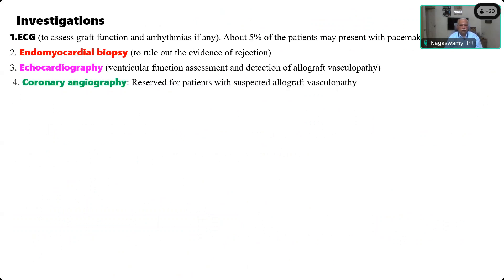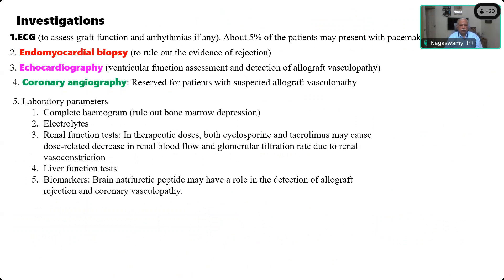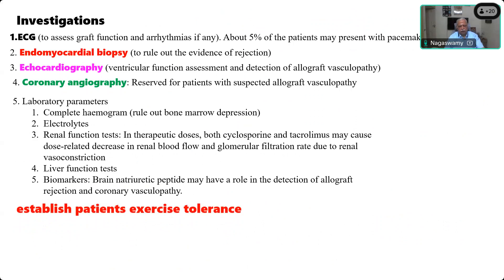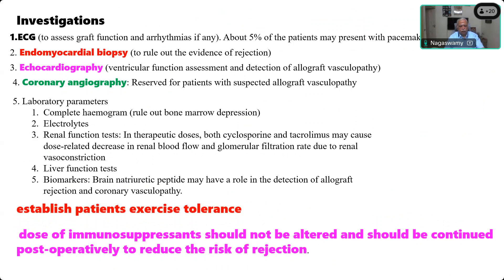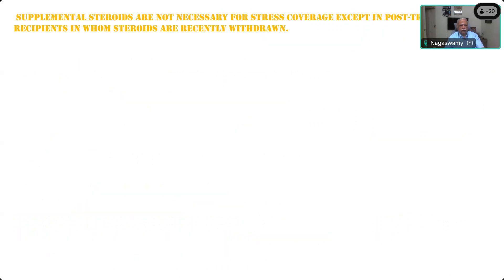Investigations include ECG to assess graft function or arrhythmias, endomyocardial biopsy to rule out rejection, echocardiography to assess ventricular function and detect allograft vasculopathy, and coronary angiography reserved for suspected allograft vasculopathy. Lab parameters: CBC, electrolytes, renal function, LFTs, and biomarkers like BNP, which has a role in detection of allograft rejection and vasculopathy. Assess exercise tolerance. The dose of immunosuppressants should not be altered and must be continued post-operatively.